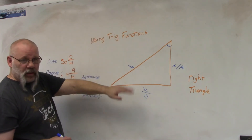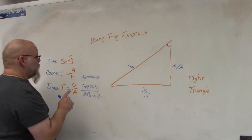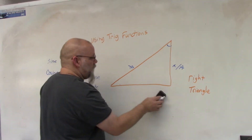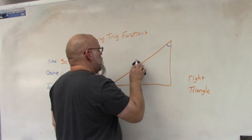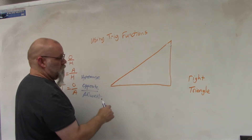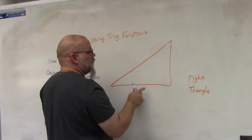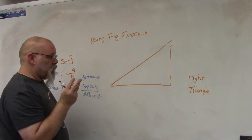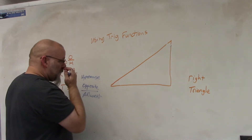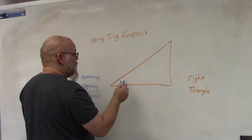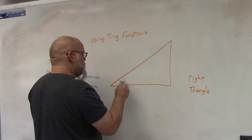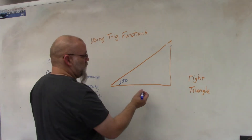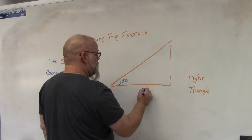Adjacent means next to, and opposite means it's on the other side. In order for these to work, you have to have two things — either two sides or an angle and a side — to find a third. So let's look at an example: we have an angle of 50 degrees and we have this side which is 20.